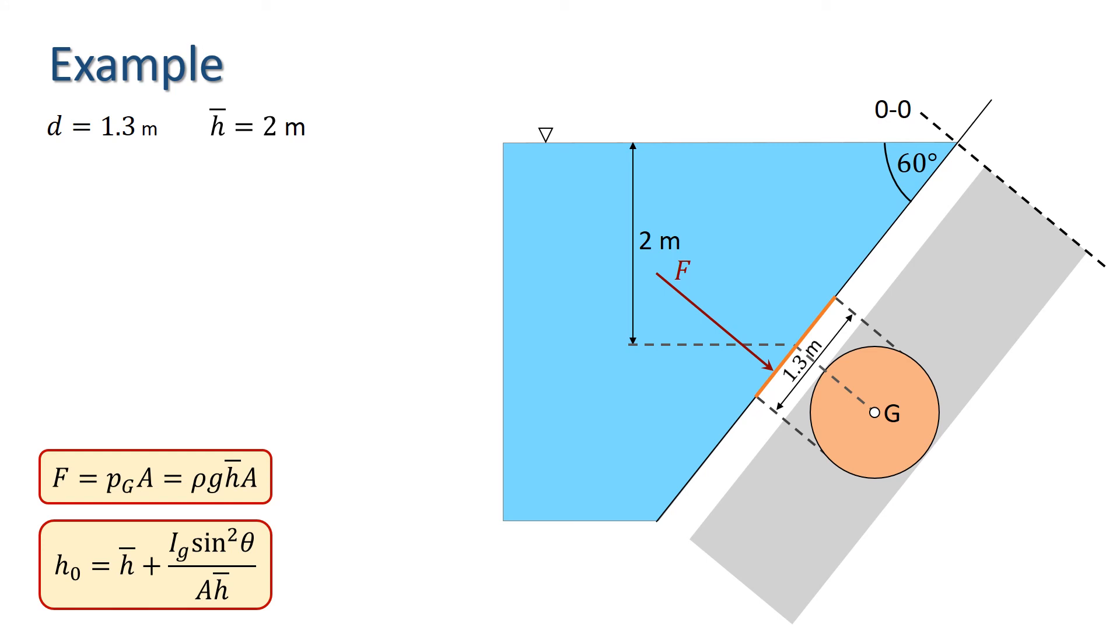Well, the pressure at the centre of gravity is rho G h bar, and taking the density of water to be a thousand kilograms per metre cubed, we have a thousand times 9.81 times 2, which is 19,620 pascals.